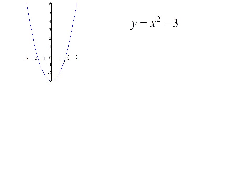In this function, y equals x squared minus 3, we can find the derivative using the difference quotient or definition of derivative by taking the limit as h goes to zero of x plus h squared minus 3 minus x squared minus 3 all over h.